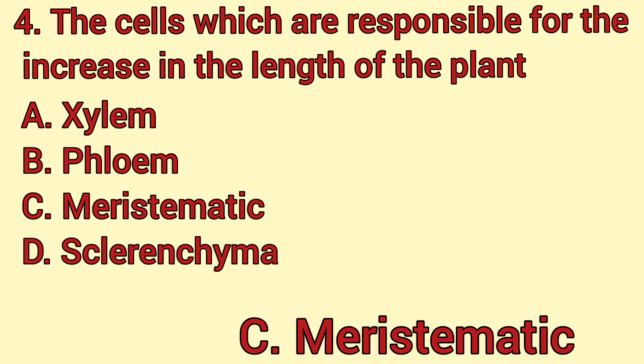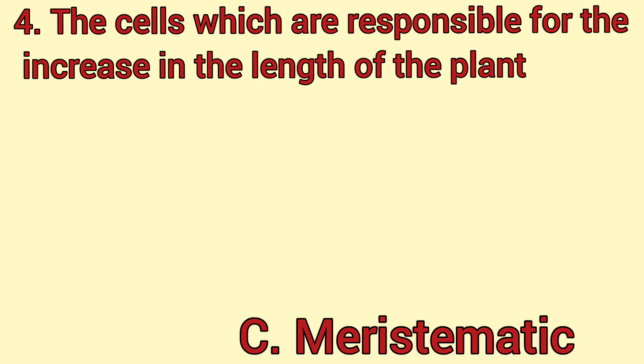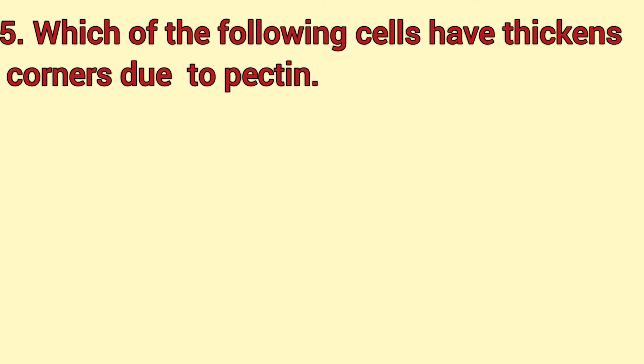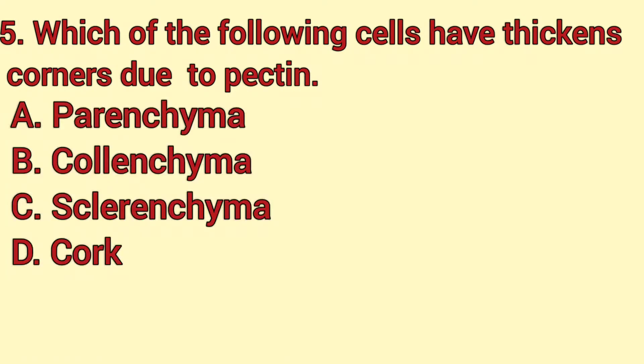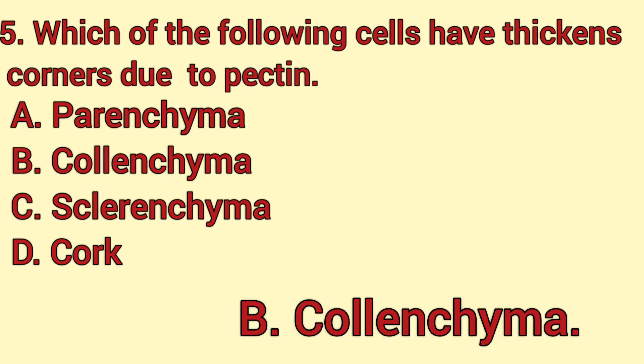Which of the following cells have thickened corners due to pectin? Parenchyma, colenchyma, sclerenchyma, or cork? The answer is B — colenchyma.